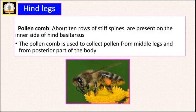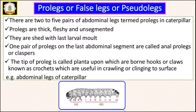The last modification is the proleg, also called the false leg or pseudo leg. These legs shed with the last larval molt, which is why they are called false or pseudo legs. In caterpillars, there are two to five pairs of abdominal legs called prolegs. They are thick, fleshy, and unsegmented. One pair present on the last abdominal segment is called the anal proleg or clasper. The tip of the proleg is called the planta, upon which there are hooks called crotchets, used for crawling and clinging to the surface.